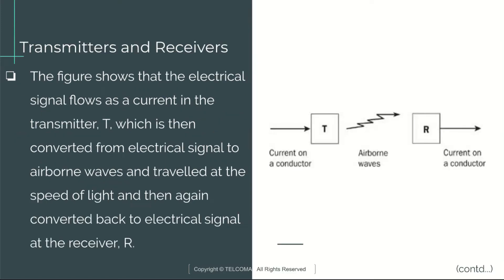This figure shows that the electrical signal flows as a current in the transmitter, denoted by T, which is then converted from an electrical signal to airborne waves and travels at the speed of light, and then again converted back to an electrical signal at the receiver, denoted by R.